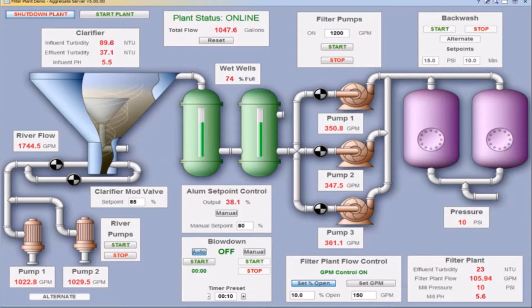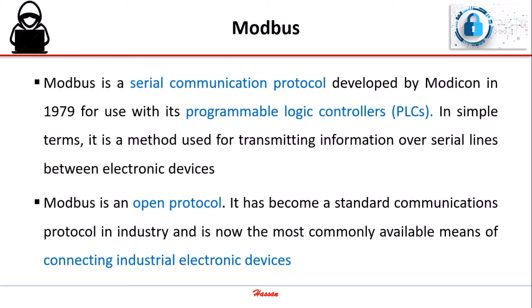Let us first understand what Modbus is and how it works. Modbus is a serial communication protocol developed by Modicon in 1979 for use with its Programmable Logic Controllers. In simple terms, it is a method used for transmitting information over serial lines between electronic devices. Modbus is an open protocol and has become a standard communications protocol in industry, and is now the most commonly available means of connecting industrial electronic devices.